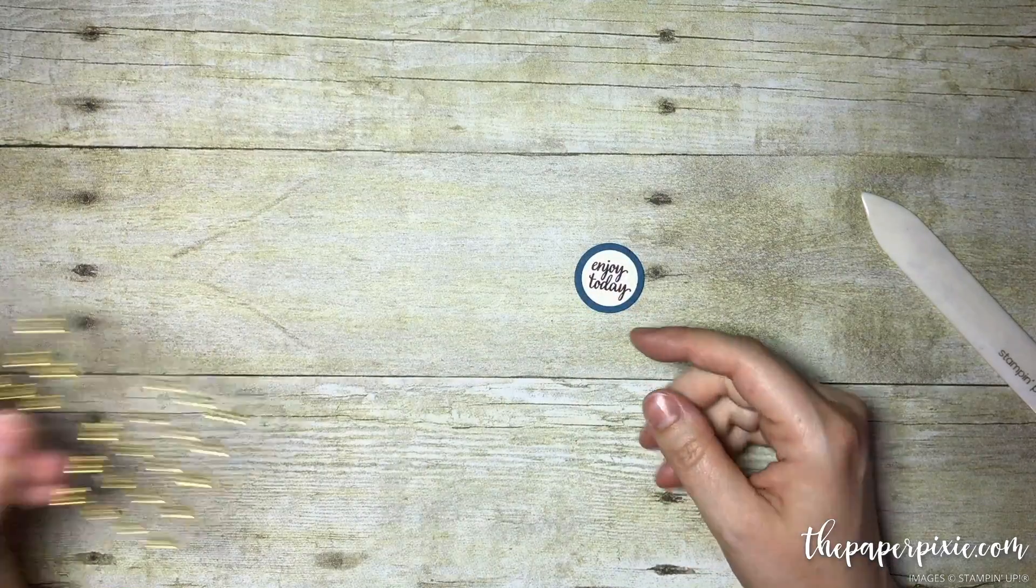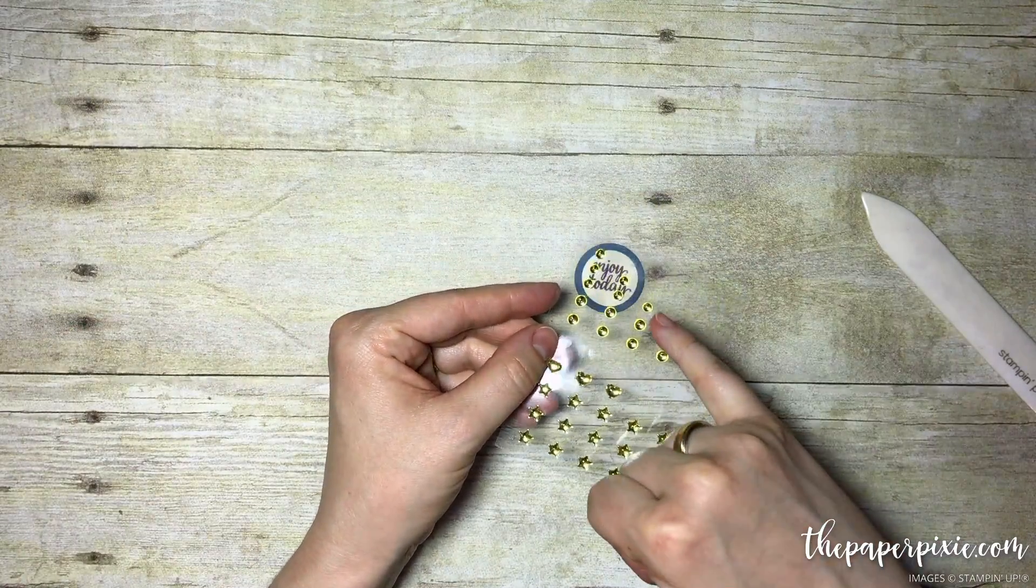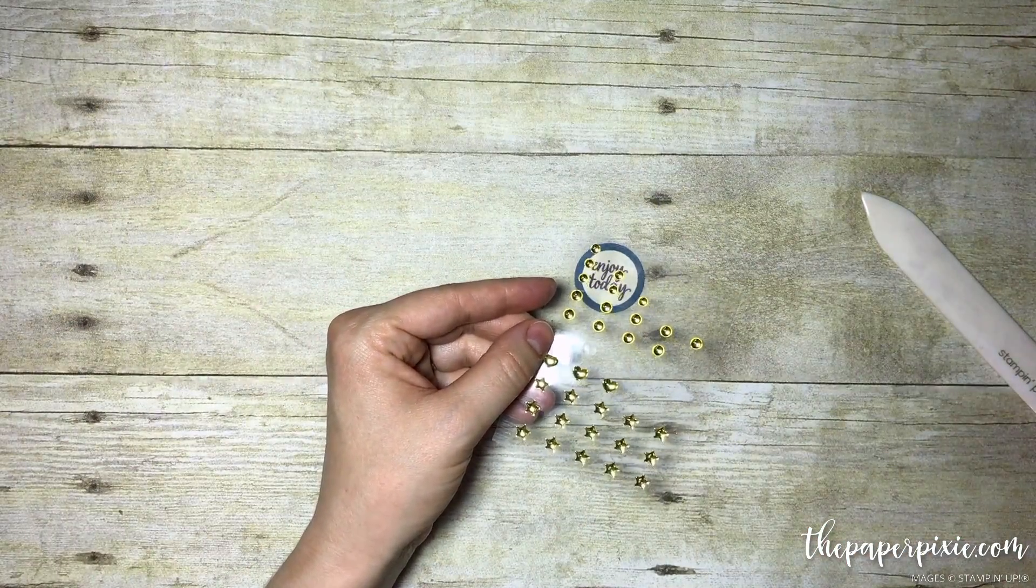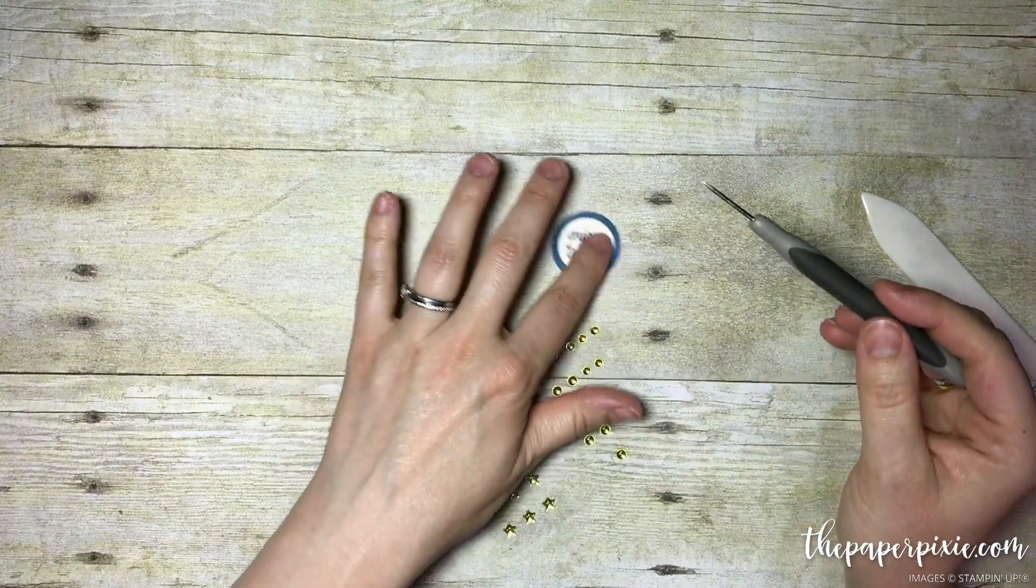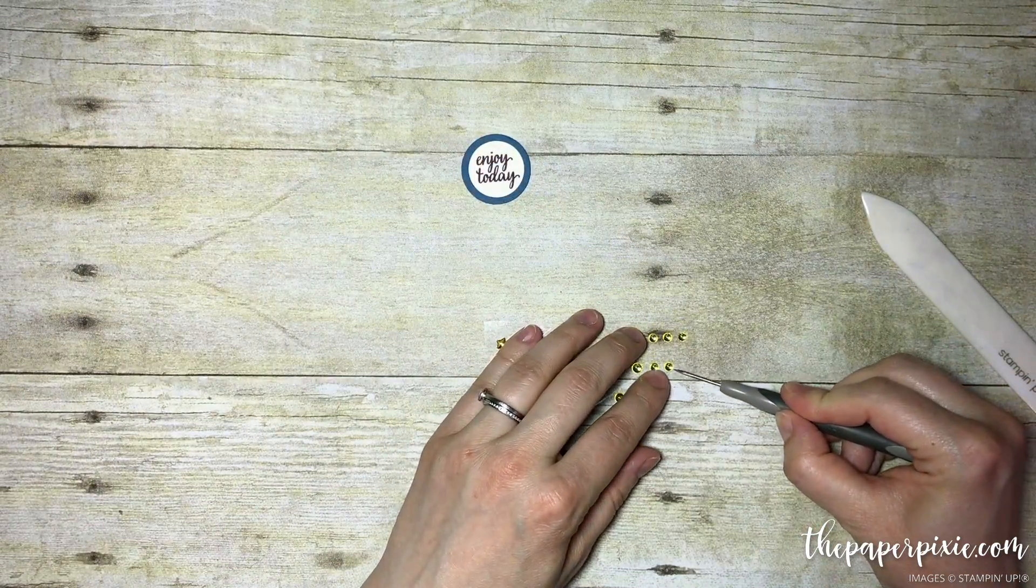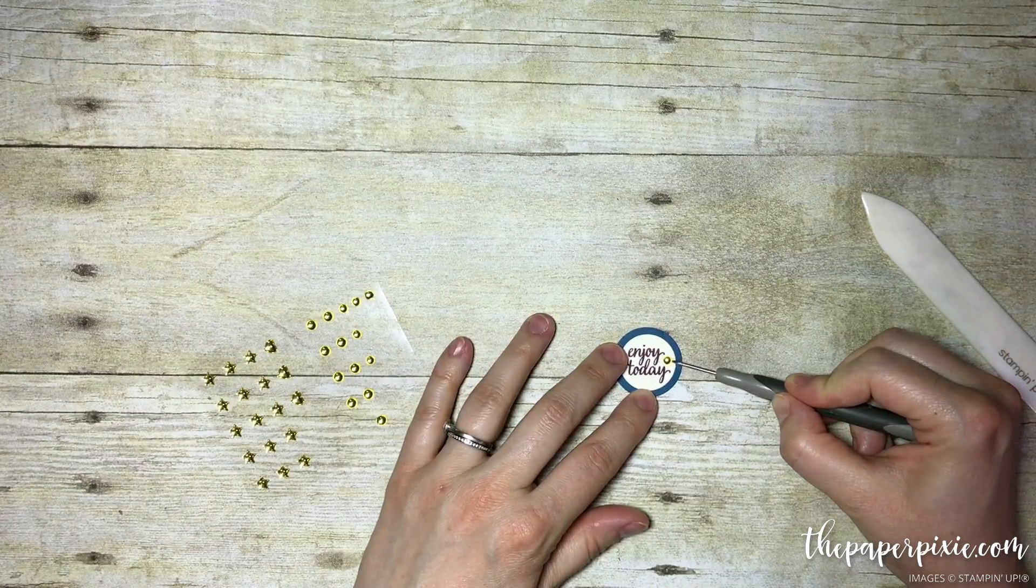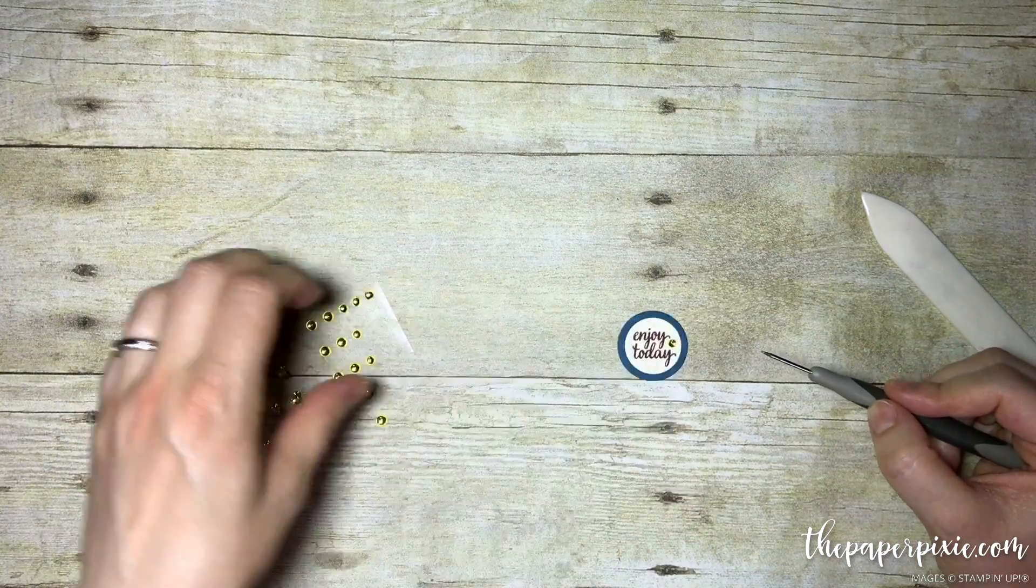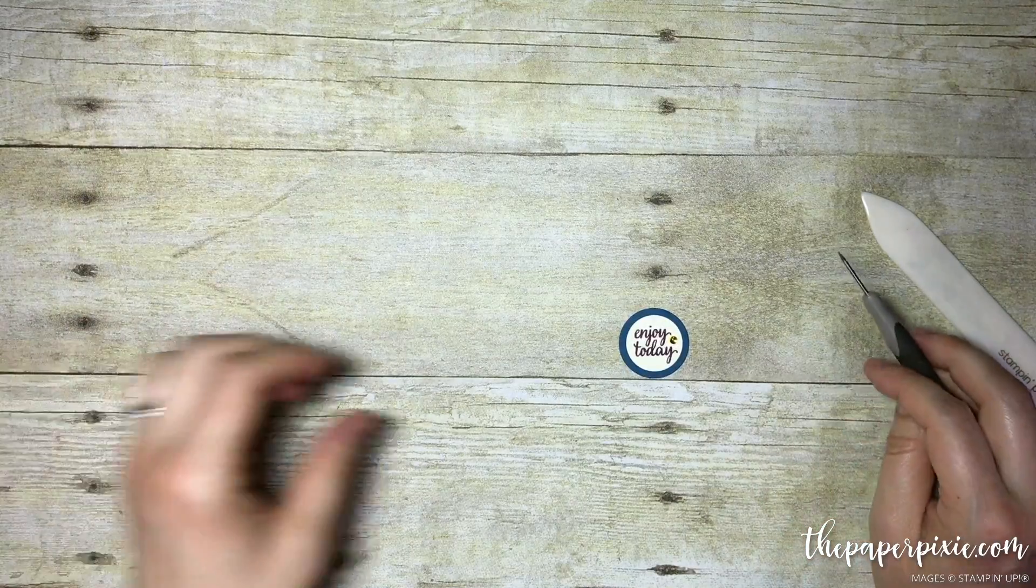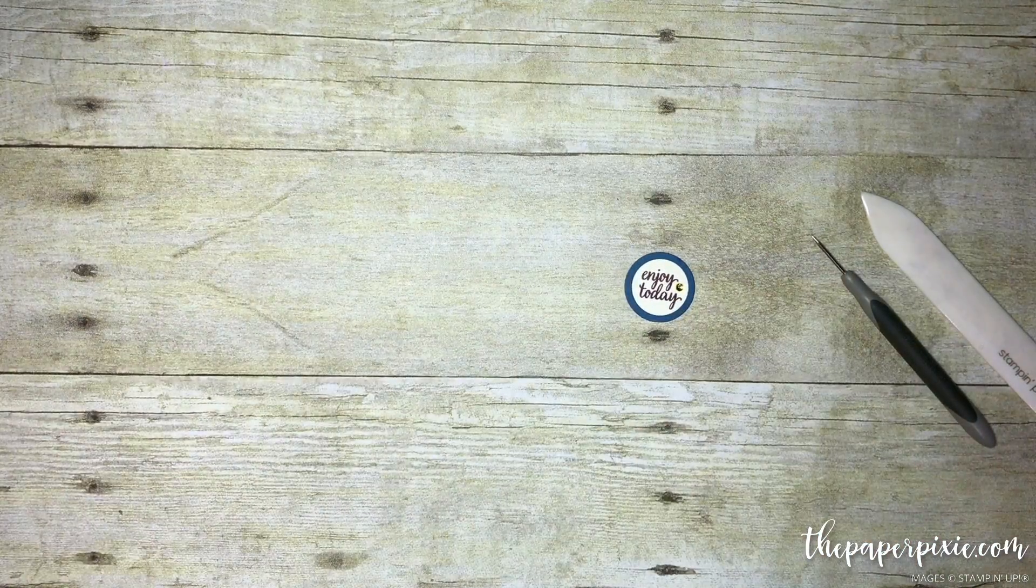Now I'm going to add from our metallic enamel shapes the smallest circle. I love using our paper piercing tool to pick up these embellishments because it allows me to put it exactly where I want it. It's just a little bit of bling and the gold goes really well with the designer series paper.